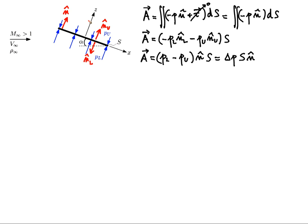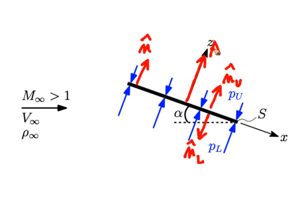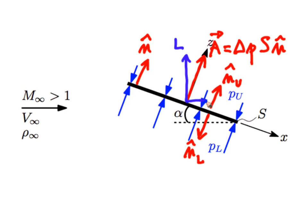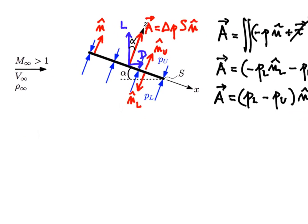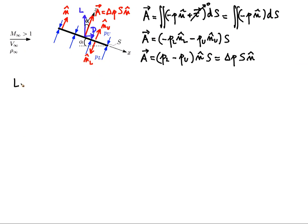We're being asked about lift and drag. So if we go back to our figure here, this is the aerodynamic force, delta P times S times N. And we can decompose in the customary way into lift L and drag D — drag being in the streamwise direction, L in the direction normal to the free stream. The angle is alpha. So now we project A into those two directions. We get that lift L equals delta P times S times cosine alpha, and that drag D equals delta P times S times sine alpha.